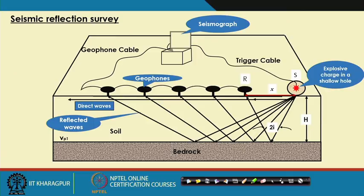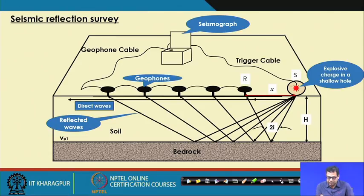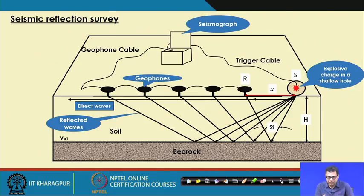Before I start today's topic, last class I discussed about the different types of geophysical exploration. The first one is seismic reflection survey, where we can determine the thickness of soil layer and the velocity of the wave. I discussed how this wave can be generated, whether it is a shear wave, primary wave, or P-wave, and then we can determine the velocity and the thickness of the soil layer.